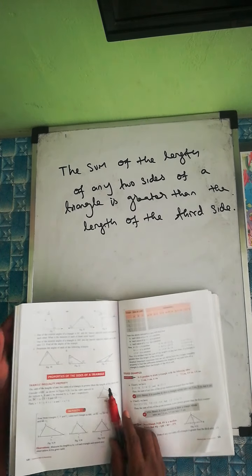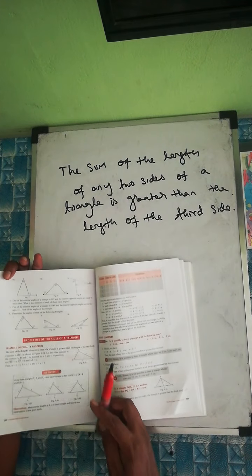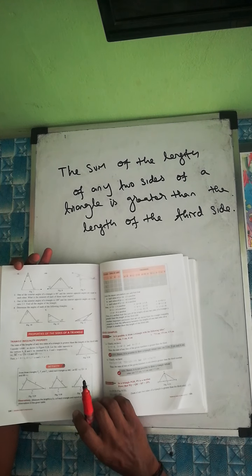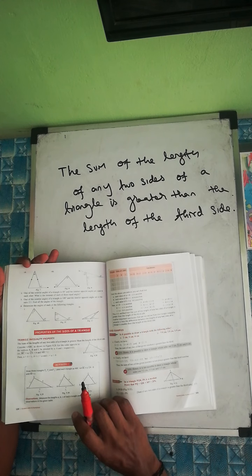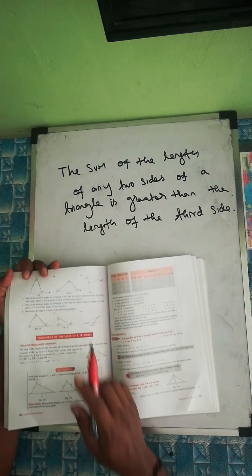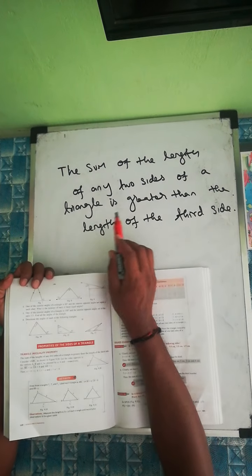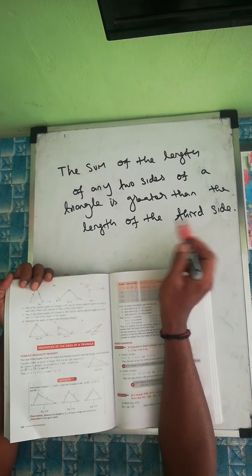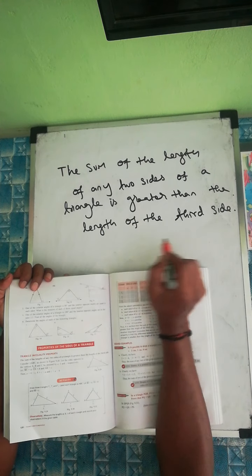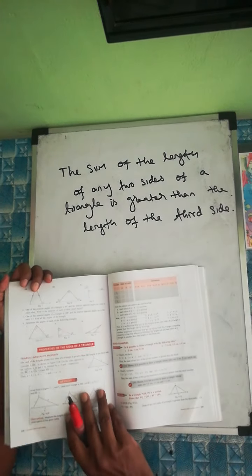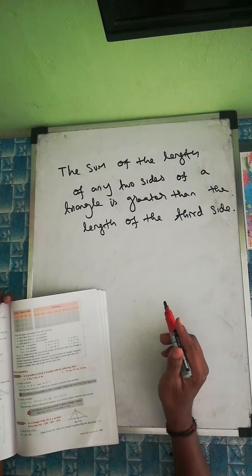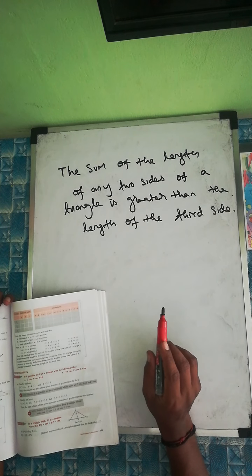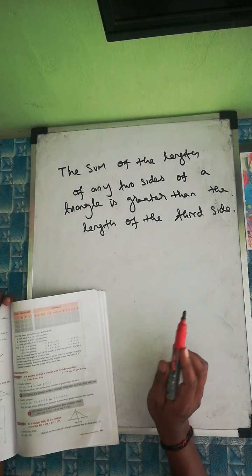Next exercise 9c1 — we are going to cover the Triangle Inequality Property. The property states: the sum of the length of any two sides of a triangle is greater than the length of the third side.